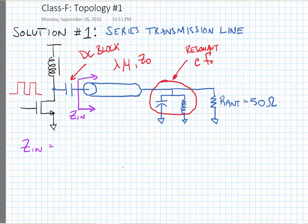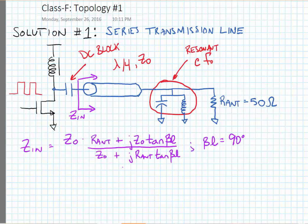We can use our basic analysis of quarter wave transmission lines to find this impedance. So this is the impedance looking into the transmission line from the drain of the transistor, noting that the transmission line is a quarter wavelength, which is 90 degrees.